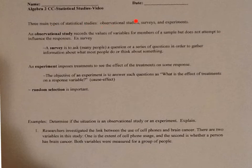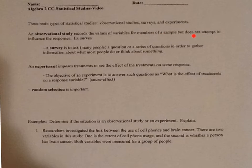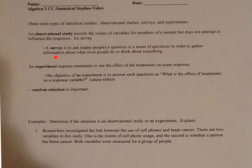There are observational studies, surveys, and experiments. An observational study records the values of variables for members of a sample but does not — and this is the key — does not attempt to influence the response. An example of an observational study would be a survey. A survey is asking many people a question or a series of questions in order to gather information about what most people do or think about something.